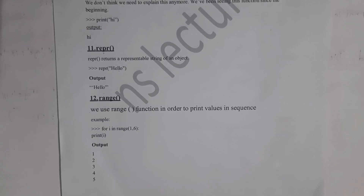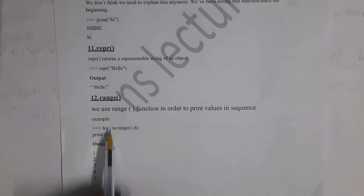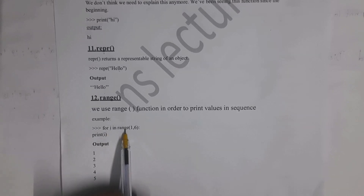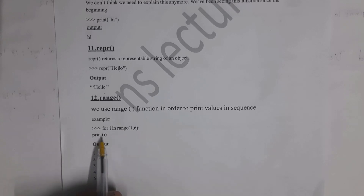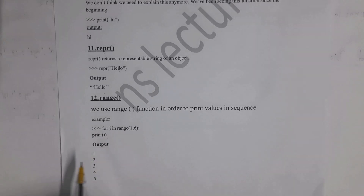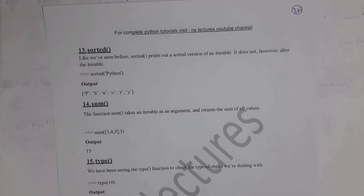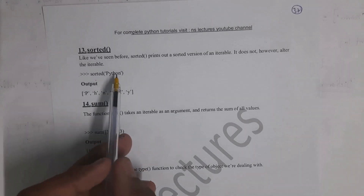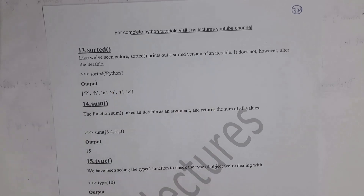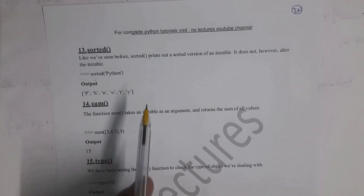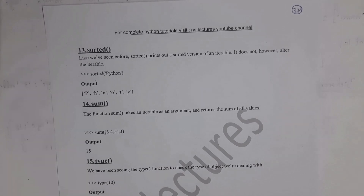For example, using range: for i in range(1, 6): print(i) gives output 1 2 3 4 5. Next is the sorted function. Using sorted, you can arrange elements in alphabetical order. For example, sorted('python') prints the characters of 'python' in alphabetical order, giving output h, n, o, p, t, y.